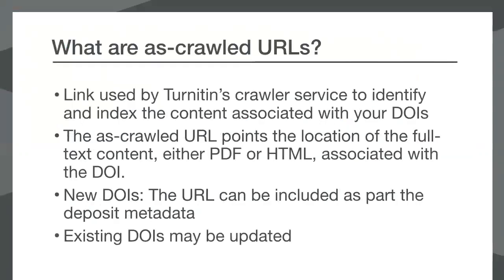So what are as-crawled URLs? It's a specific crawler-friendly link used by crawler services to index content. Turnitin needs the as-crawled URL for the content associated with each DOI in order to index your content as part of the Similarity Check membership agreement. The as-crawled URL points to the location of the full text content, either in PDF or HTML, associated with the DOI. Even if your as-crawled URLs are the same as your DOI resource URLs, you still need to enter them separately as specific as-crawled URLs for this service. This allows the service to scan text against submitted manuscripts but does not provide outside reader access to content. For new content, the URL can be included as part of the deposit metadata and can be updated easily for existing DOIs.